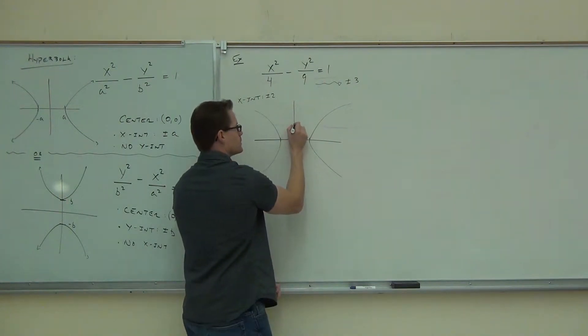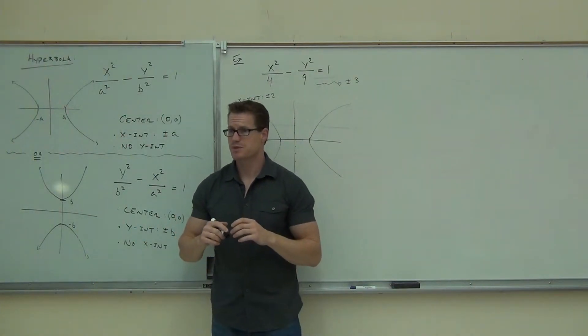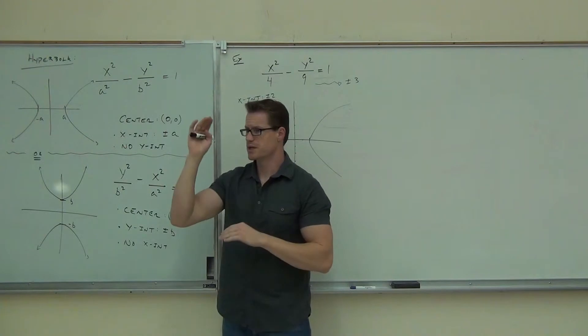So, we would have, let's see, 1, 2, 3, 1, 2, 3. Do you agree that if this were an ellipse, it would cross at 2, negative 2, 3, negative 3?